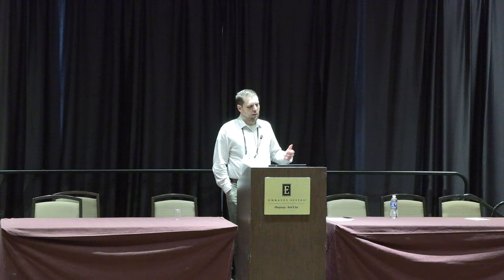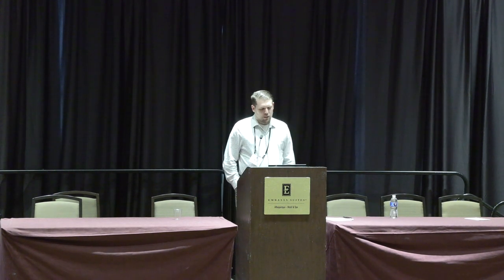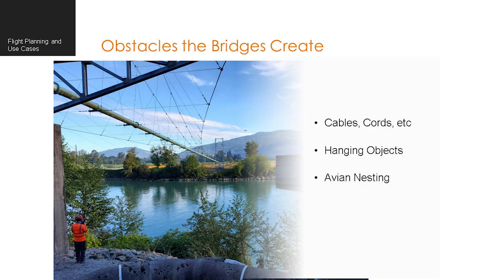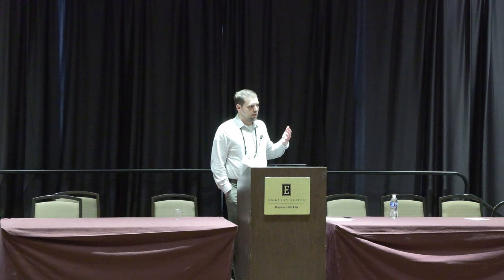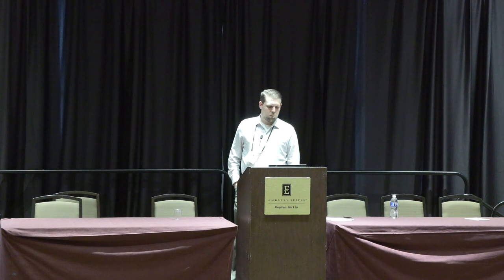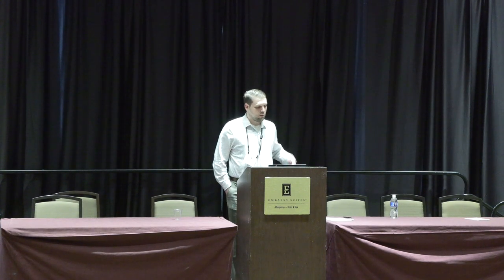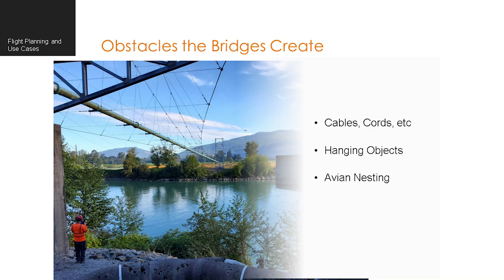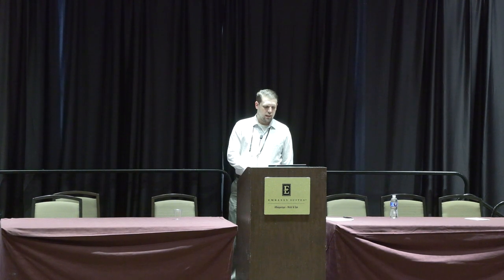We need to understand where those airports are and how we communicate with them when flying. Once airspace is established, we look at the bridge itself. This example is from Washington, just north of Seattle — a pipeline bridge with a lot of suspension cables. It's very easy to get entangled, so we need to understand where our limitations are, where we can put the drone without entanglement, where we can see structural details, and if there are hanging objects like chains. Bird nesting can also be a problem, especially in large numbers.